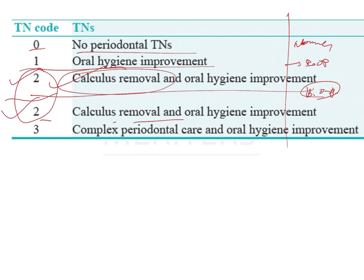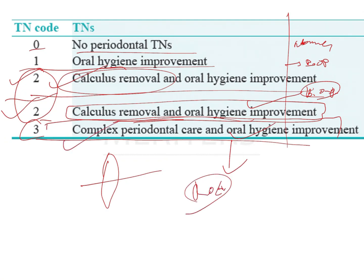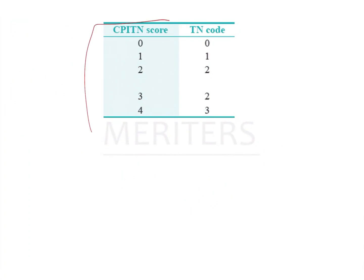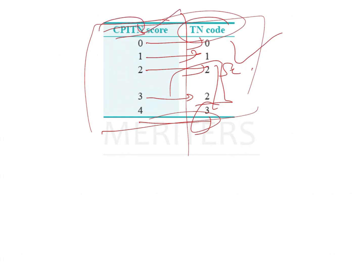Treatment code 2 repeats for both calculus with and without additional factors — calculus removal and oral hygiene improvement. For score 3 (red band half visible), the treatment is complex periodontal care including root scaling, root planing, and periodontal surgery. Treatment code 3 corresponds to complex periodontal care. Matching summary: healthy — no treatment; score 1 — hygiene instruction; score 2 — scaling with hygiene instruction; score 3 — scaling with hygiene instructions; score 4 — complex periodontal care.